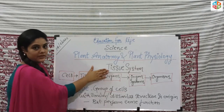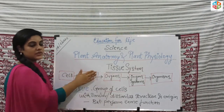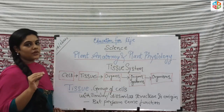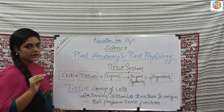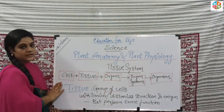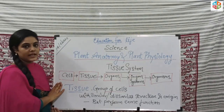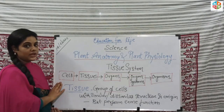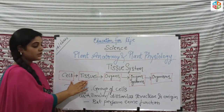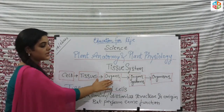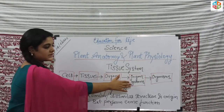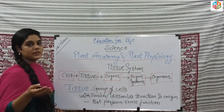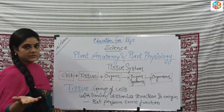I am going to talk about the topic of the tissue system. Before going into the topic, you should know the basic level of organization in an organism. Cell is the basic and functional unit of life. Cells put together form tissues. Tissues combine to form organs. Organs combine to form organ systems, and organ systems combine to form an organism, which can be either a plant or animal.